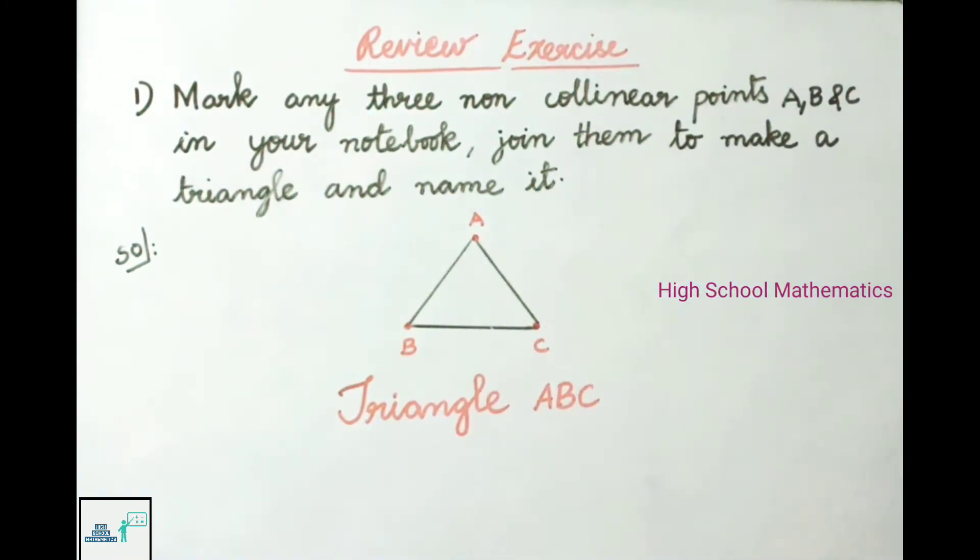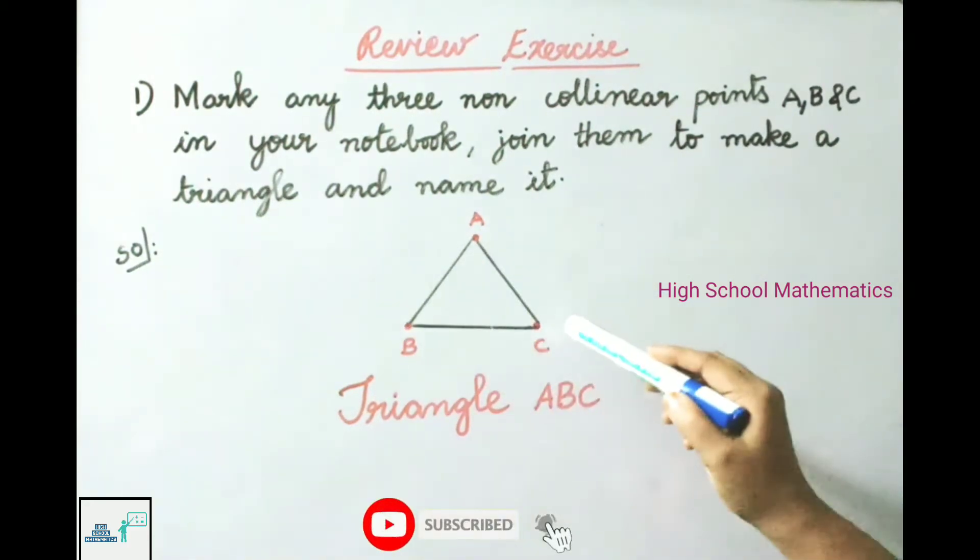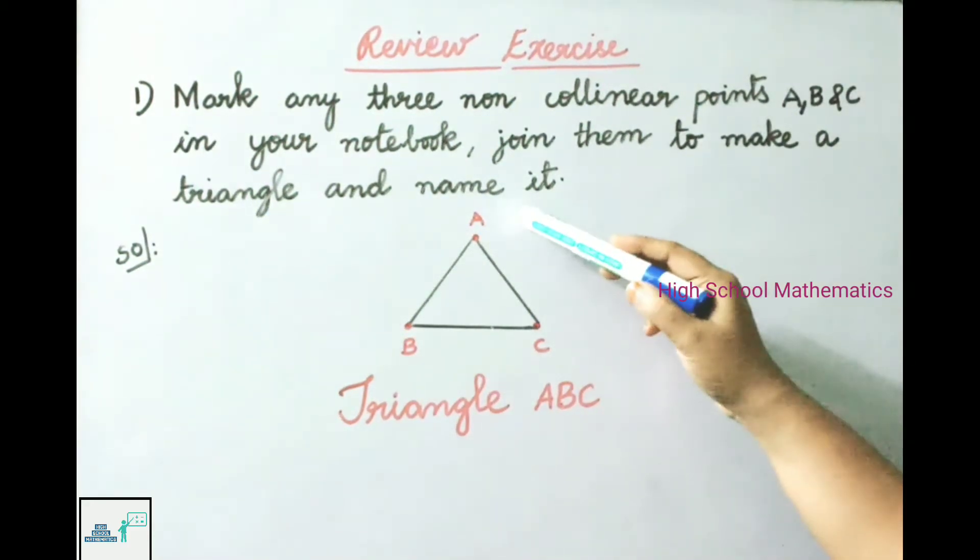Let us see the solution. First we have marked three non-collinear points and named them as A, B, and C and joined them. So this is a triangle ABC.